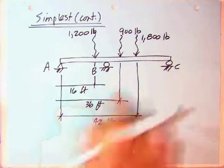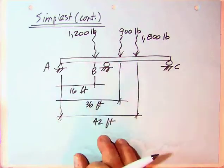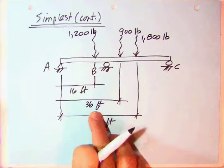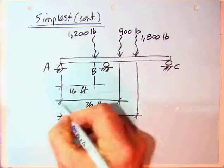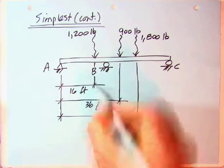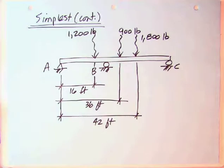And then for the triangular load that's left over, from 100 down to 50, 900 pounds, and it's located at 1 third from B to C, which came out to be 36 feet from A. We needed all of our dimensions from A, because that's where we were going to take moments when we were going to apply equilibrium.